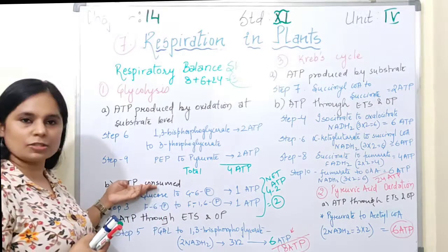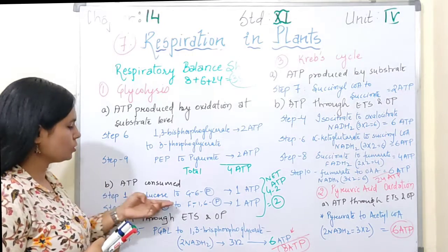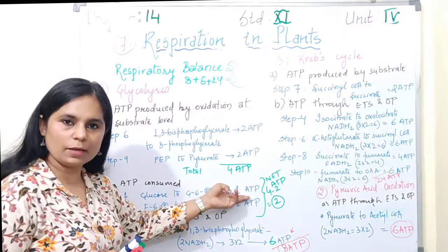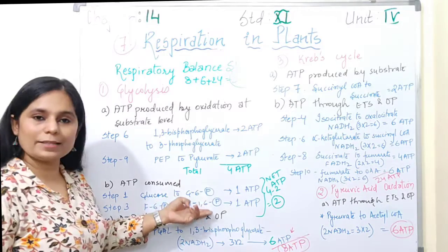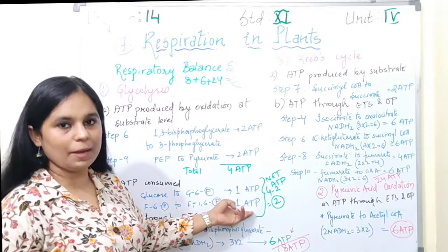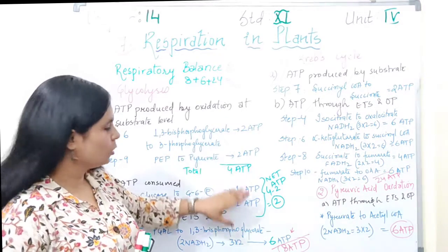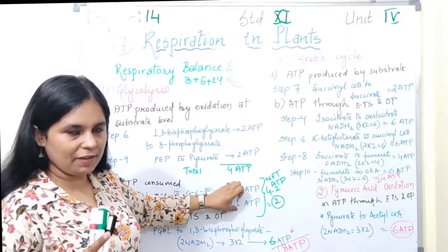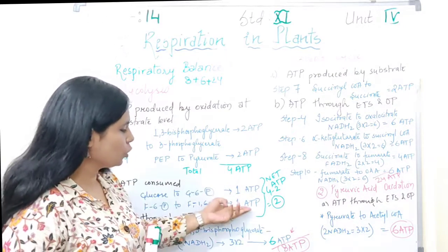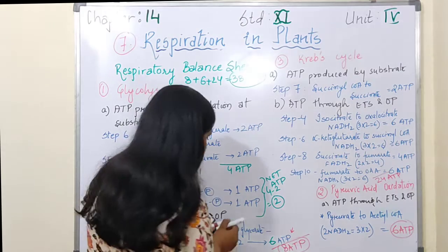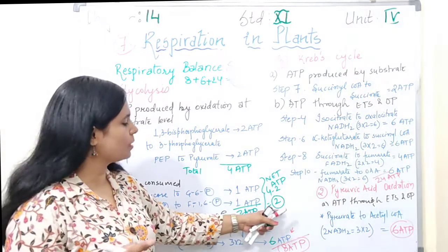Preparatory phase mein jo ATP consume ho raha hai 2 steps mein: Step 1, glucose to glucose-6-phosphate ke time pe 1 ATP utilize kar rahe hain, aur 3rd step mein fructose-6-phosphate se fructose-1,6-bisphosphate ke time pe bhi 1 ATP utilize ho raha hai. So 4 ATP banta hai, 2 ATP utilize hota hai preparatory phase mein, net ATP 4 minus 2 = 2 ATP.